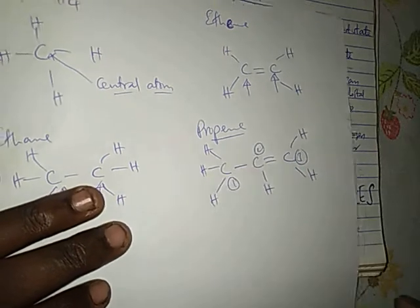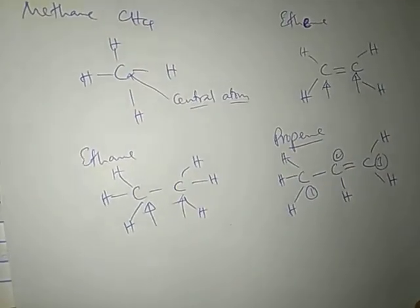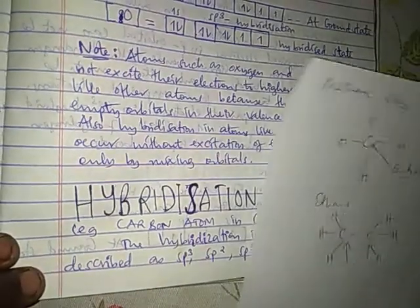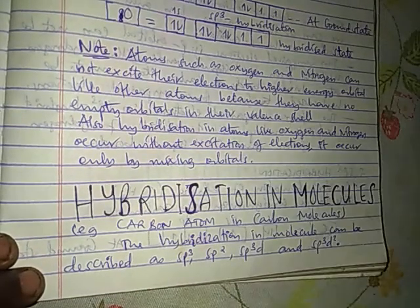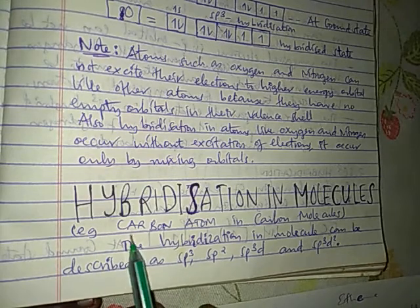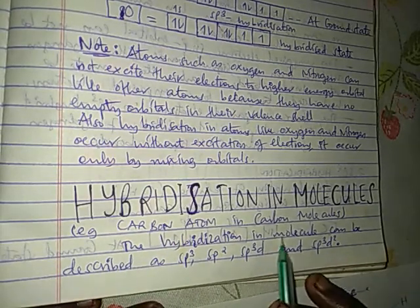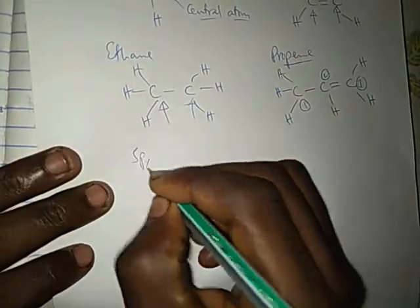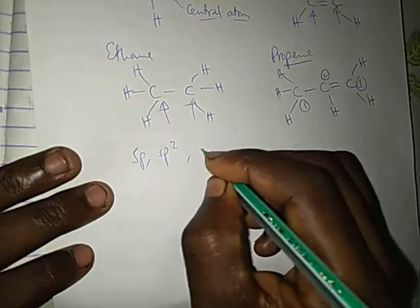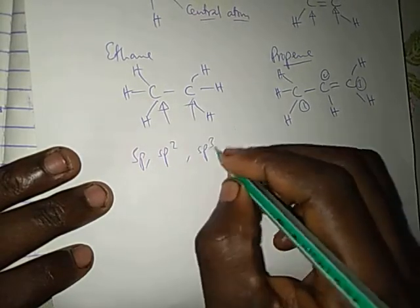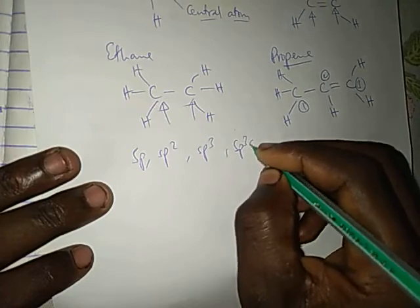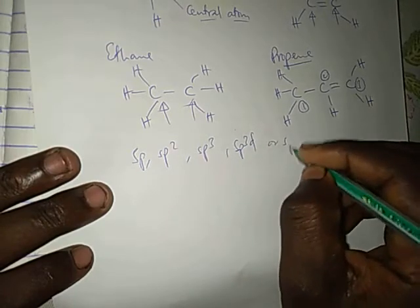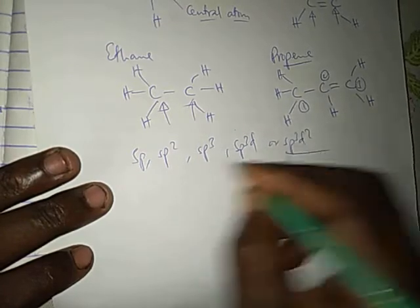Now let's discuss about how hybridization occurs. We look at the carbon atom in carbon molecules. The hybridization of a molecule can be described as SP, SP2, SP3, SP3D, or SP3D2. Any kind of hybridization can occur. So let's see some examples here, starting with a molecule that has SP3 hybridization.